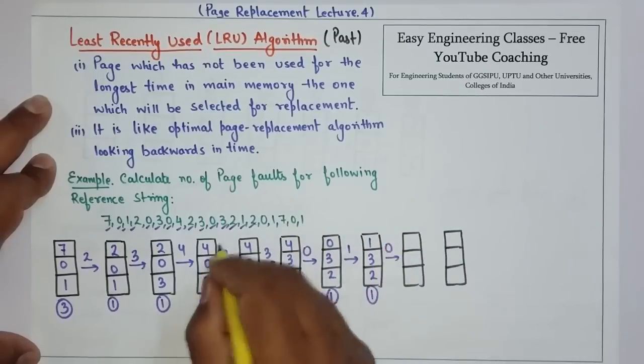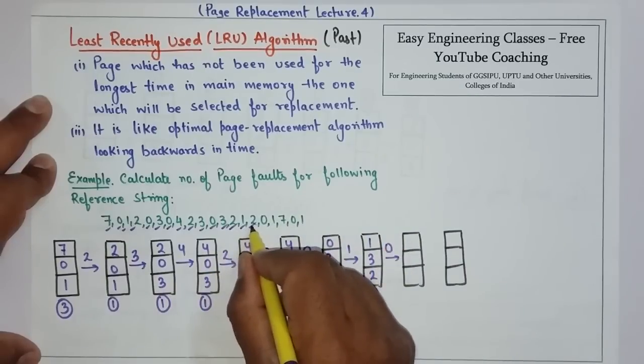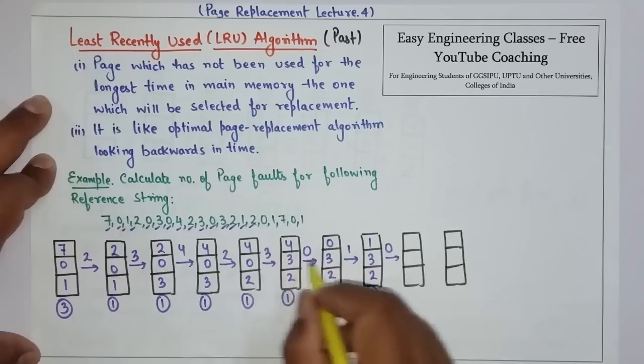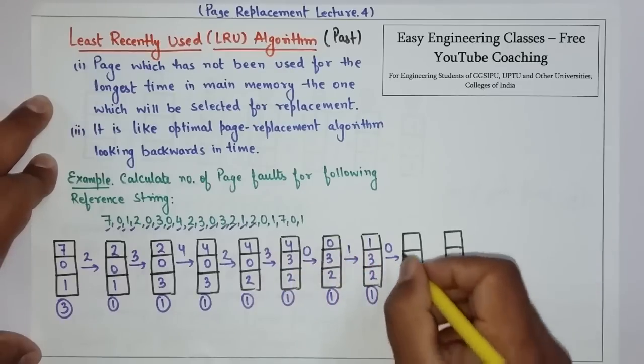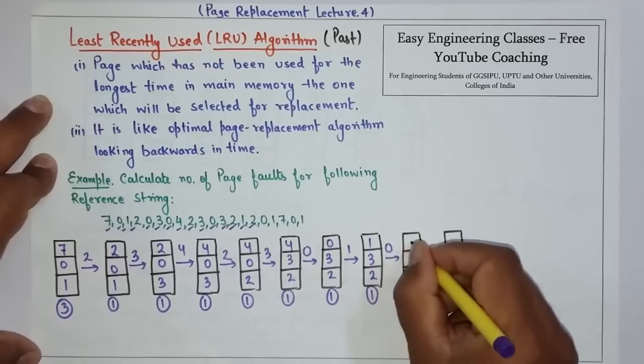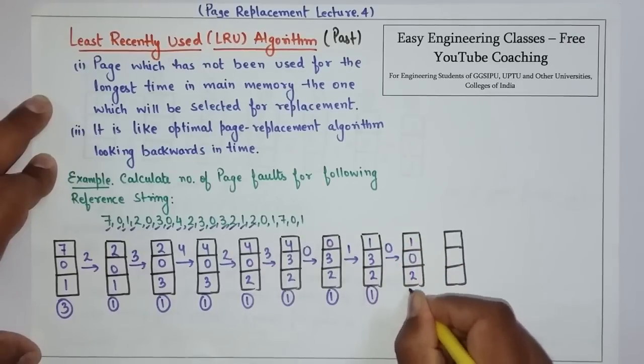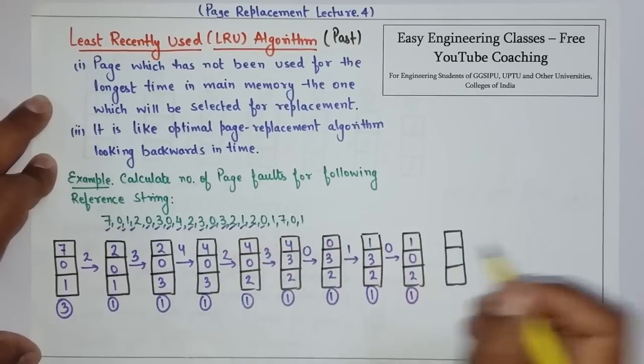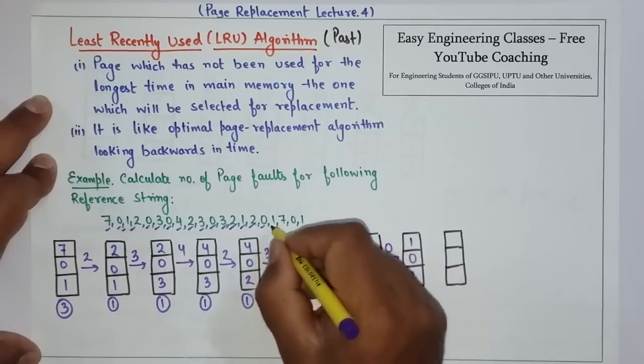0. Now if you see 1 and 2 are recently used compared to 3. So we will replace it with 3. So 1, 0 and 2. Then comes 1. 1 is already there.